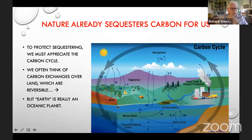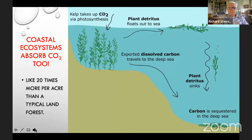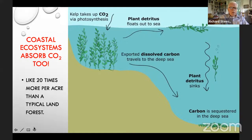The earth is an oceanic planet, and we really need to think more about the oceans. Starting with coastal systems: kelp really takes up a lot of CO2 along coastal regions, and it can have plant detritus floating out over the sea and still function. The plant detritus will sink, as well as some of the kelp itself, and it'll be sequestered in the deep sea. About 20 times more CO2 is absorbed per acre of coastline than a typical land forest — that's an impressive statistic.